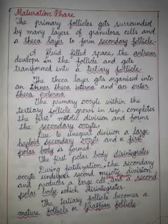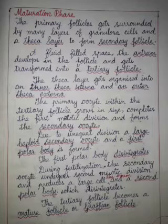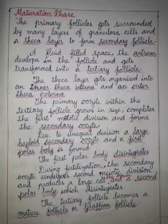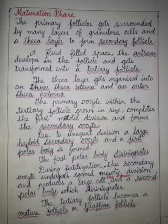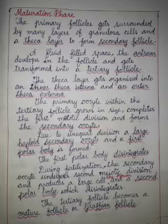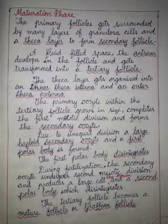The secondary oocyte enters into the second meiotic division. The granulosa cells surrounding the secondary oocyte form the mature follicle, also called the Graafian follicle. In females, at the end of oogenesis, only one haploid ovum is formed. Two polar bodies are also formed, which disintegrate.